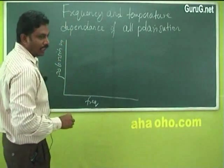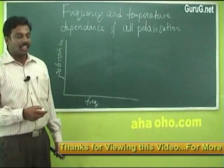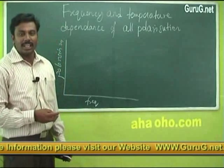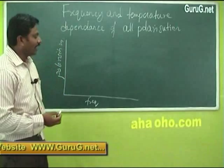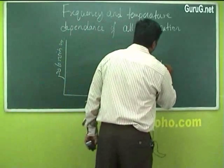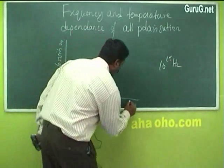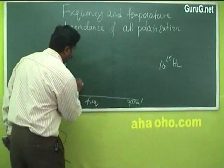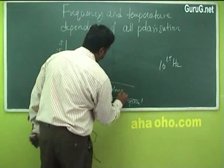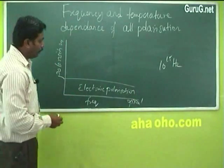First, let us consider electronic polarization. When a voltage is applied, electronic polarization occurs very fast because electrons are elementary particles. These elementary particles can react faster, and the polarization takes place even if the frequency is very high — of the order of 10^15 Hz, which is the optical region. So electronic polarization occurs at all types of frequencies.